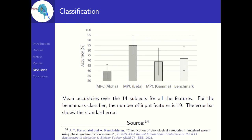We also used MPC values for classifying phonological categories in imagined speech into nasals and bilabials. These results are available in our other paper titled 'Classification of Phonological Categories in Imagined Speech Using Phase Synchronization Measures.' The results are comparable to what we observed here, where MPC values in the alpha band with an ML algorithm give the lowest accuracy, while MPC values in the beta band give the best accuracy, outperforming the benchmark classification technique on the same dataset.